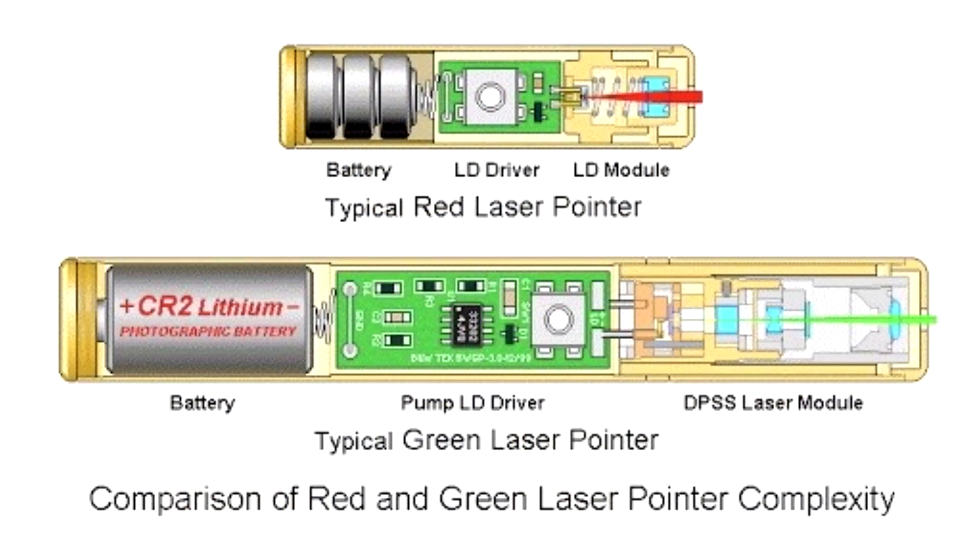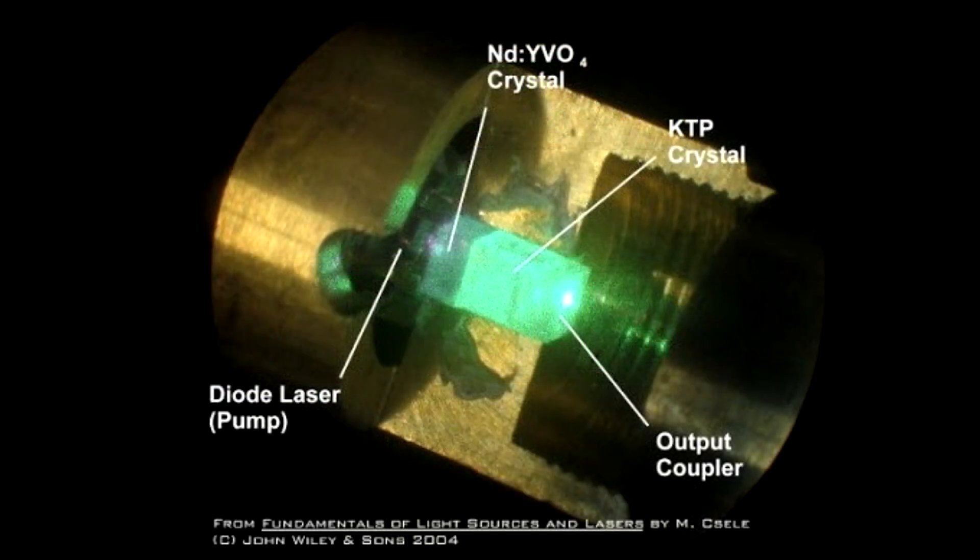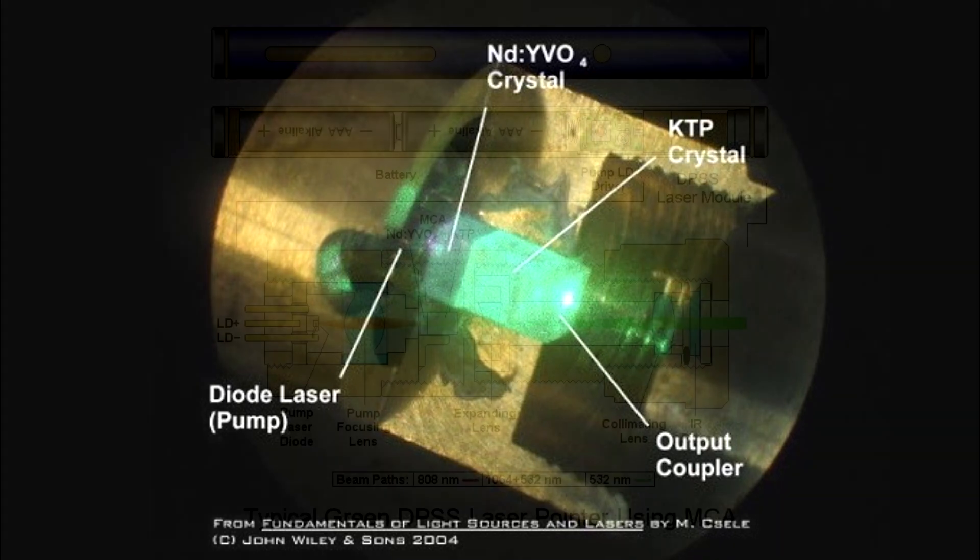The second type of lasers are diode-pumped solid-state lasers, also referred to as DPSS lasers. These units are more complex, using a laser diode to pump light through crystals, also referred to as gain media, to get the final wavelength desired.